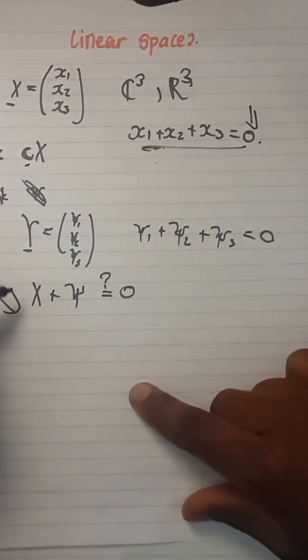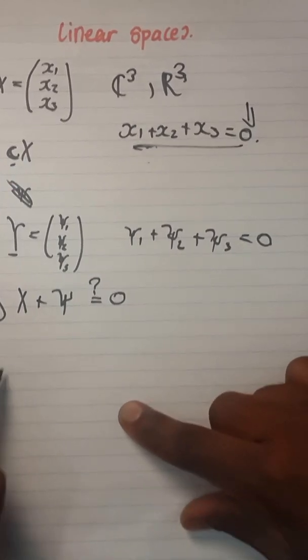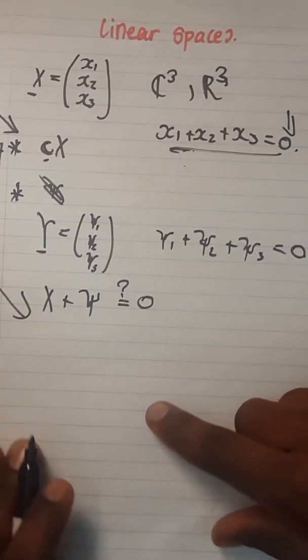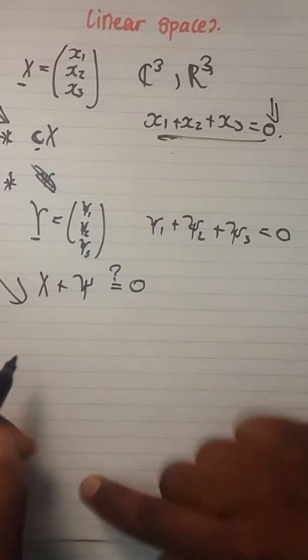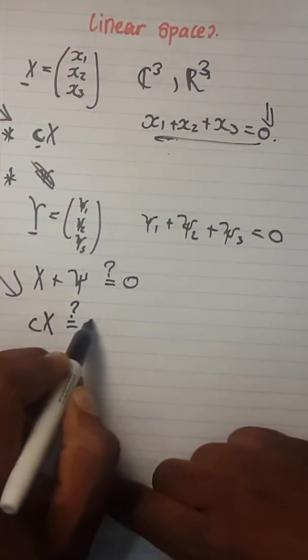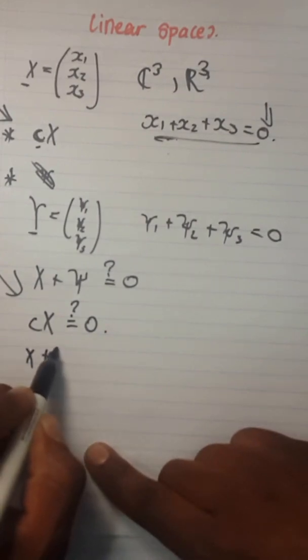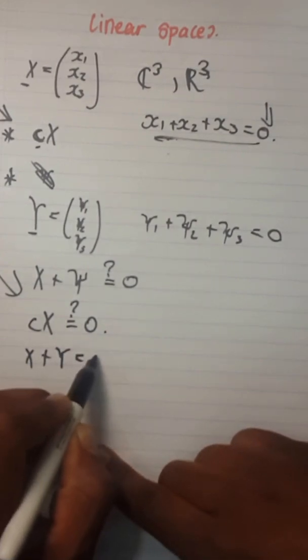You have to show that CX equals zero and X plus Y equals zero. If you work one of these and find that it is not true, there will be no need to check the other step.